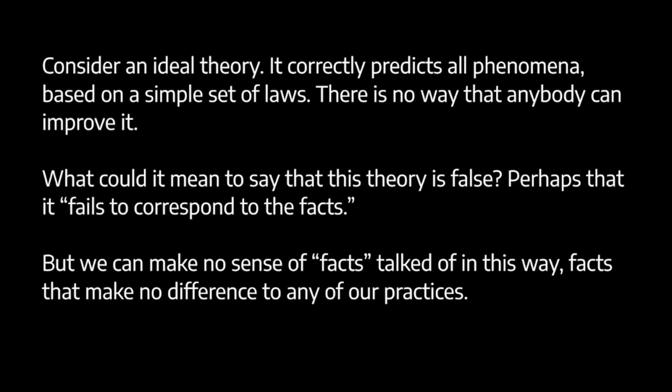The question is: what could it mean to say that this ideal theory is false? A correspondence theorist will say the theory might nevertheless fail to correspond to the facts. The pragmatist would respond: if it fails to correspond to the facts, where is the failure? Go on, point out the failure. But by stipulation, this theory is ideal — nobody can point to any way of improving it, any problem with whether it fits the evidence, whether it's simple and easy to use. So this theory just will be true on the pragmatist view.